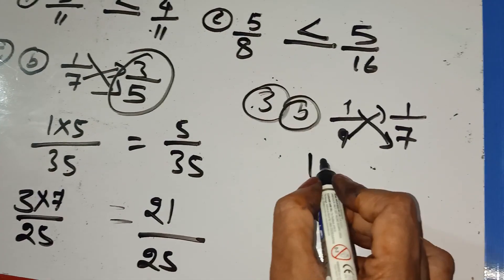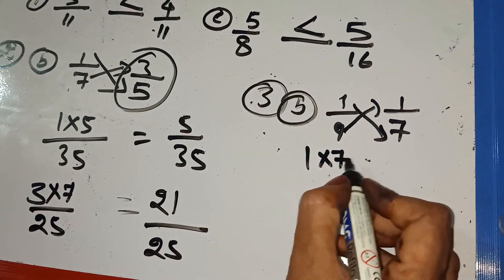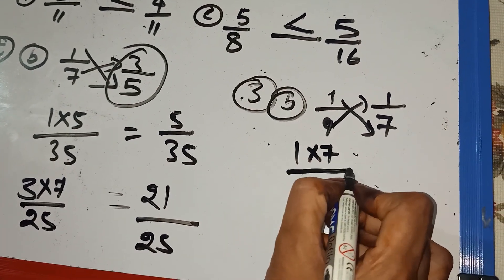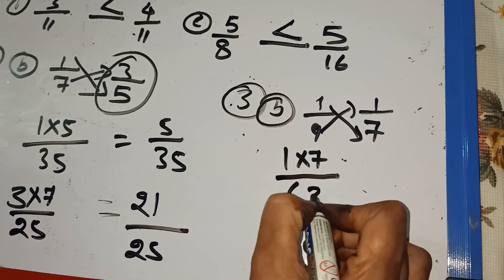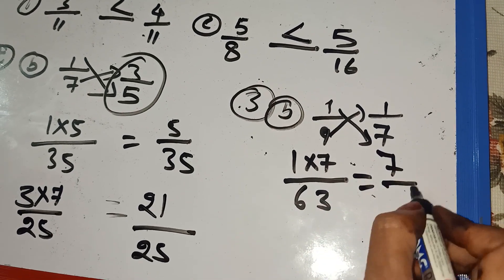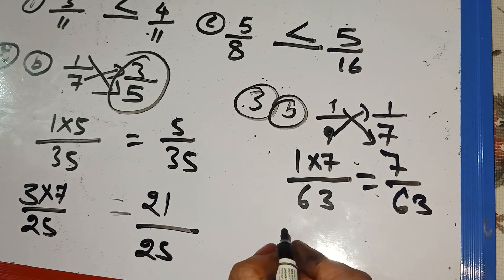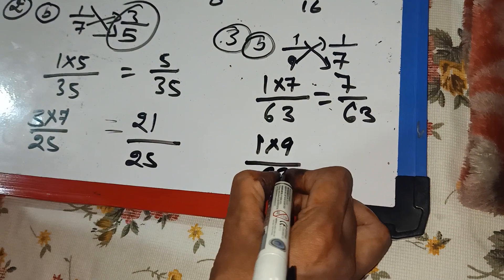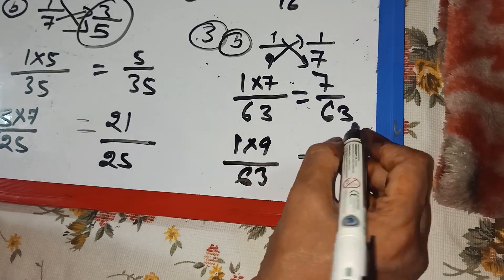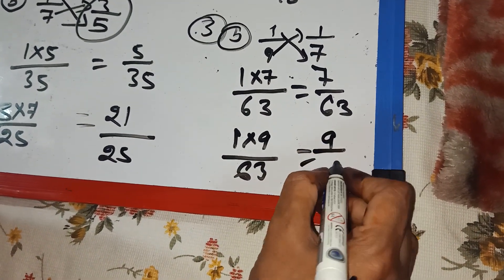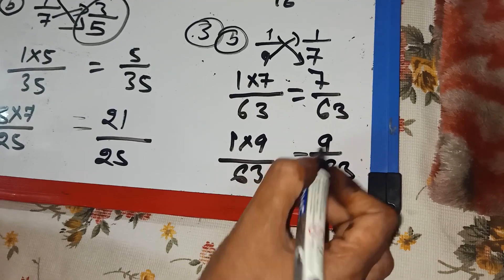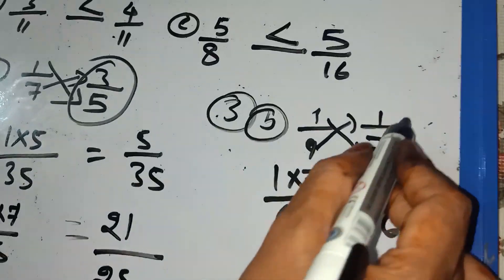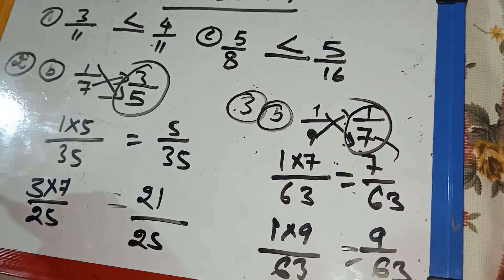you will do 1 multiply by 7, 7 by 63. And after that, 1 multiply by 9, 9 by 63. So, it is 9 by 63. So, you see which is smaller? So, 1 by 7 is smaller.